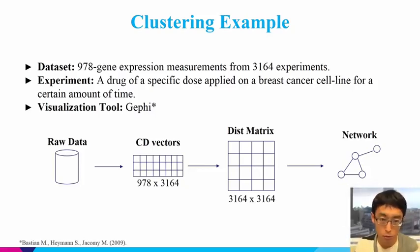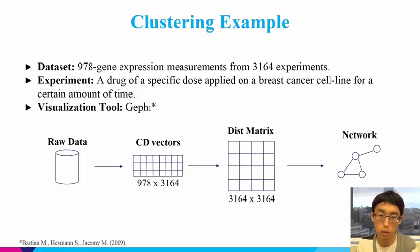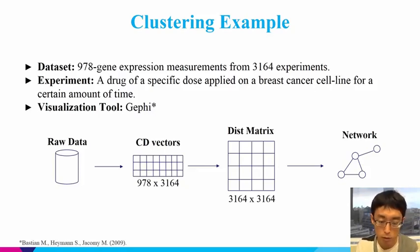In this matrix, the rows are the genes and the columns are the experiments. I will calculate the distance between the columns — the distance between the experiments. After calculation, I get a 3,164 by 3,164 distance matrix, in which values represent the cosine distance between two characteristic direction signatures. From this distance matrix, I apply a cutoff to get the binary matrix, and from the binary matrix I input it into Gephi to get the network.